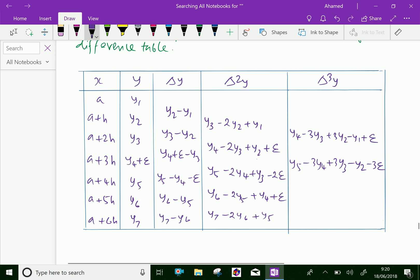Next, y6 minus 3y5 plus 3y4 minus y3 and 3e. Next is y7 minus 3y6 plus 3y5 minus y4 minus e.